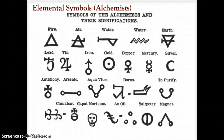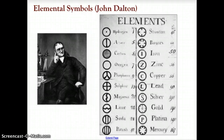During the Middle Ages, alchemists were hired by kings to turn everything into gold. They used symbols as a secret language to keep their hidden methods for changing all matter into gold.